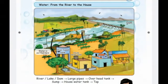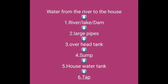Water from the river to the house. First one: river, lake, dam. Second one: large pipes. Third one: overhead tank. Fourth one: sump. Fifth one: house water tank. Sixth one: tap.